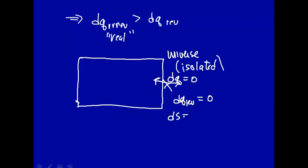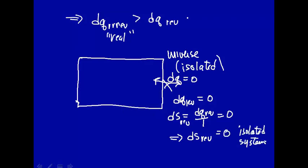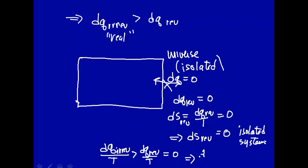Well, ds, which we defined as dq reversible over T, also has to equal zero. So for an isolated system like the universe, ds reversible equals zero. Now, we said that dq irreversible is greater than dq reversible, so dq irreversible over T is greater than dq reversible over T, which equals zero. This implies that dq irreversible over T is greater than zero for an isolated system.